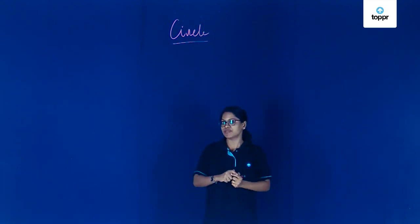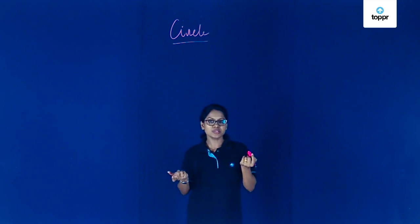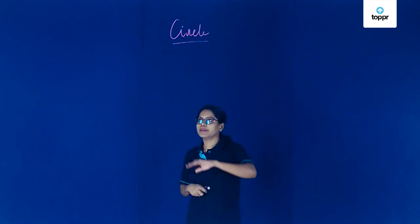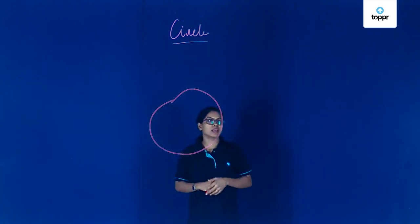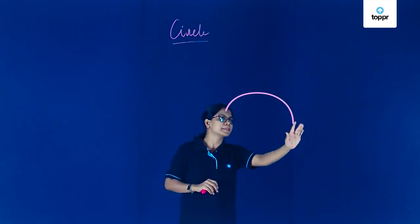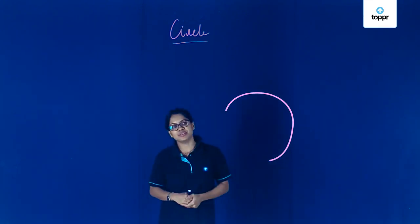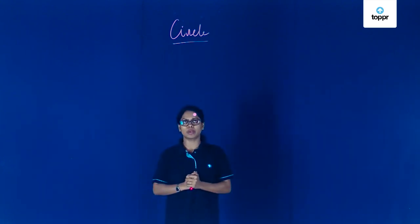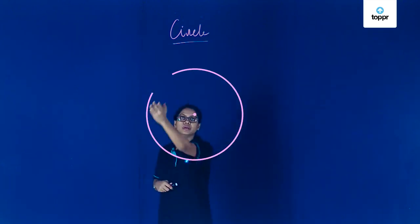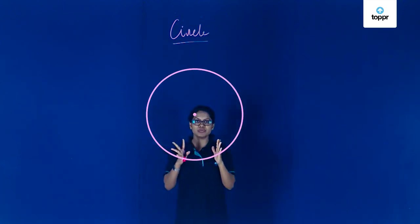This is a really exciting shape and it has very interesting facts that we'll be learning. First, let me draw a circle. Okay, that's not right. Let me try again. That's not right either. Why am I unable to draw? Let me try a different way out — I'm not very good at drawing though. What I'm going to do differently this time is fix a point and draw the circle around it. Now this is perfect!